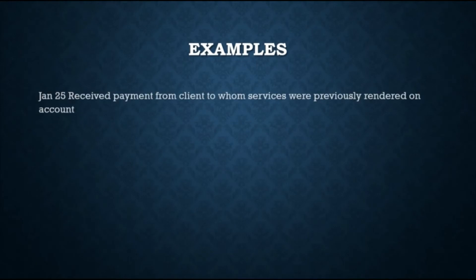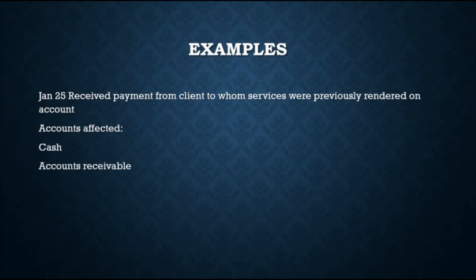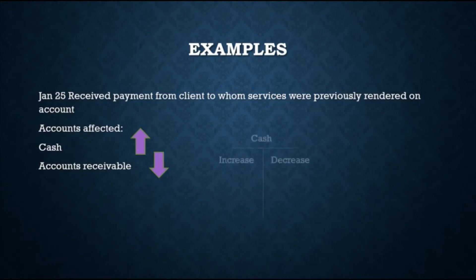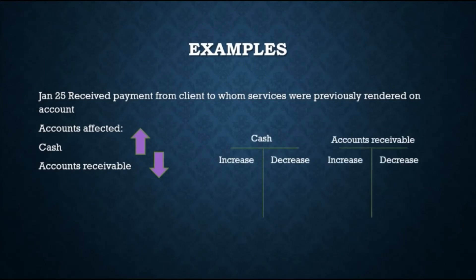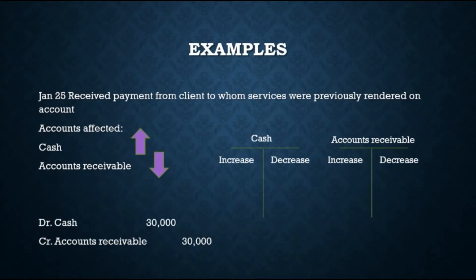For the transaction on January 25, payment was received from the client for services previously rendered on account from January 20. The accounts affected are cash and accounts receivable. Cash will increase since payment was received, and accounts receivable will decrease since the client has now paid. Since cash increased as an asset, it goes on the debit side. Since accounts receivable decreased, it goes on the credit side. The journal entry is: debit Cash $30,000 and credit Accounts Receivable $30,000.